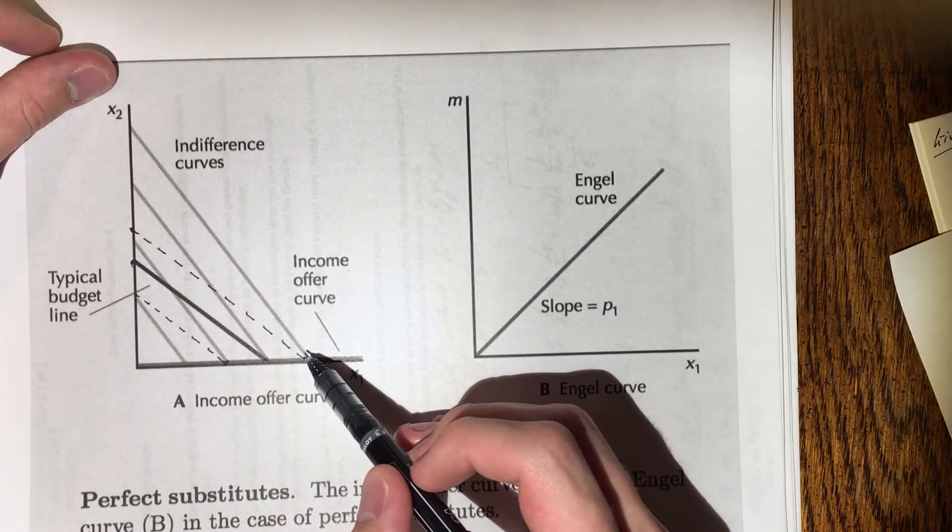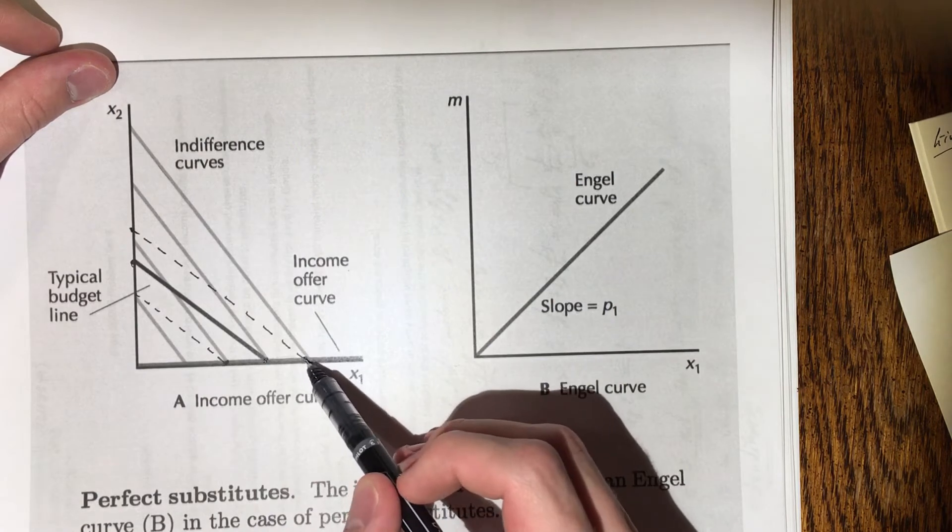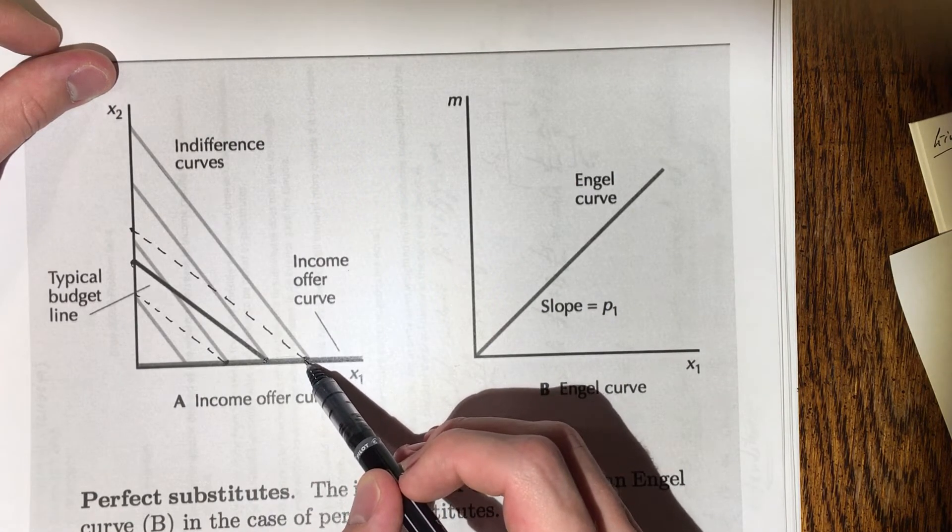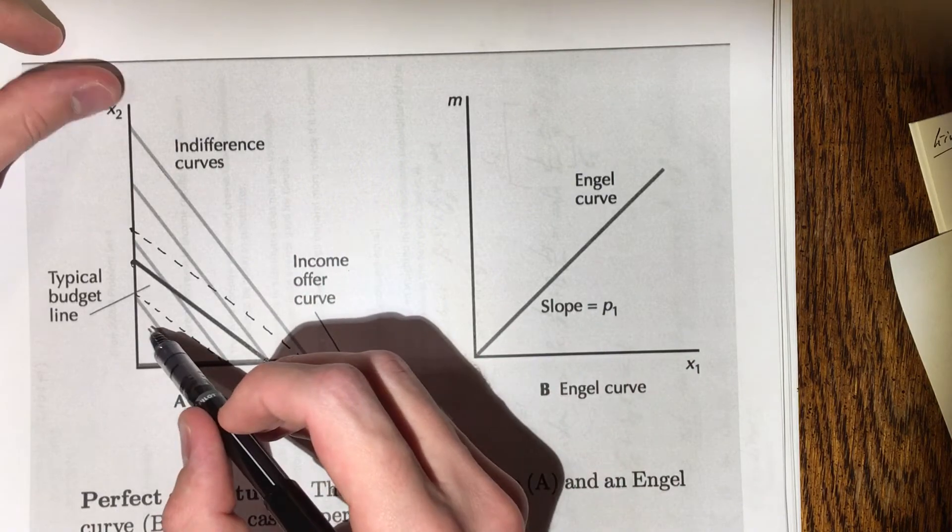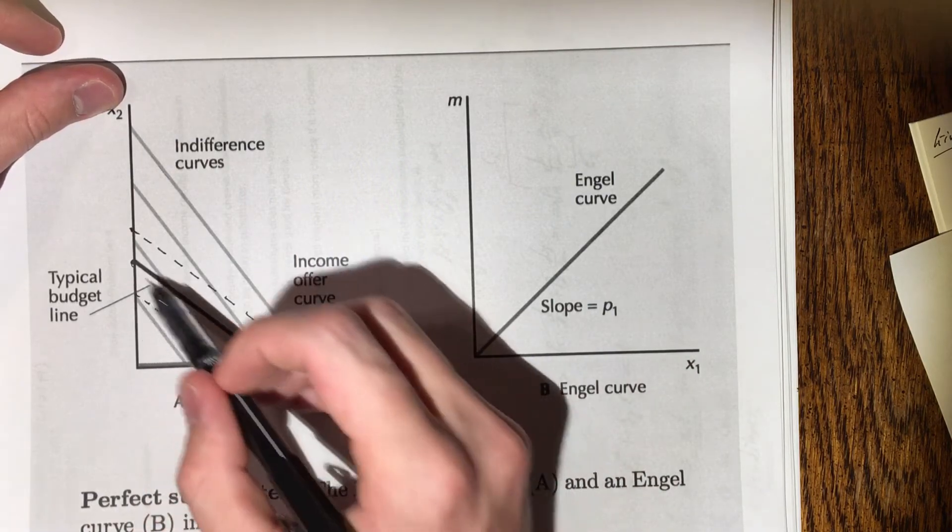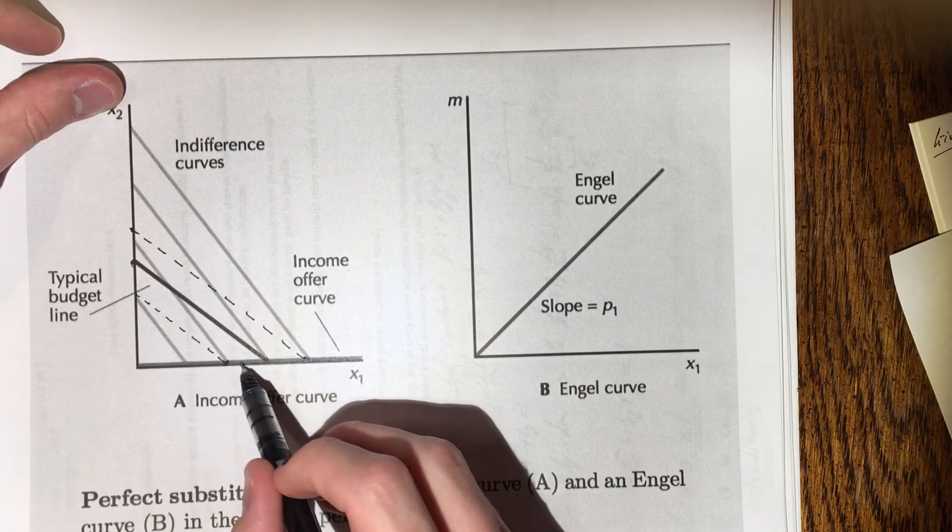So we can imagine now drawing infinitely many budget lines here on this graph, and the optimal bundle is always going to be on the intersection of that indifference curve and the budget line, which is always going to be at the x-axis.